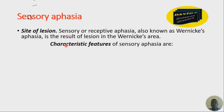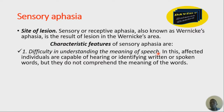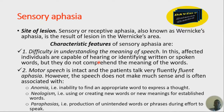The characteristic features we see are: first, there's difficulty in understanding the meaning of speech. Affected individuals are capable of hearing or identifying the written or spoken words, but they do not comprehend the meanings — they don't understand. Second, the motor speech will be intact, and patients talk very fluently — what we call fluent aphasia. However, the speech does not make much sense and is often associated with anomia — inability to find the appropriate word to express a thought.